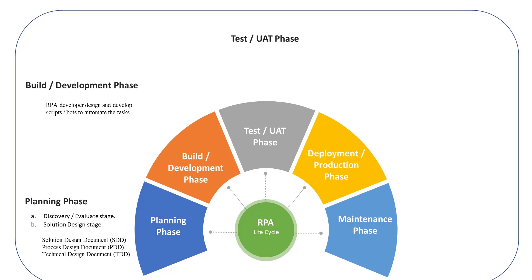The next stage is Testing, also called the User Acceptance Test (UAT) stage. In this phase, the RPA development team tests the developer bots. These bots are tested in a pre-production environment to examine how users can use them to automate specific tasks. Testing is conducted either by a separate testing team or by the organization's own dedicated testing team, which performs testing using QA tests, just like a normal SDLC flow.